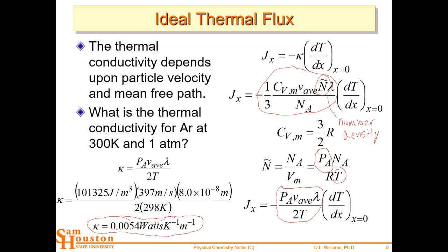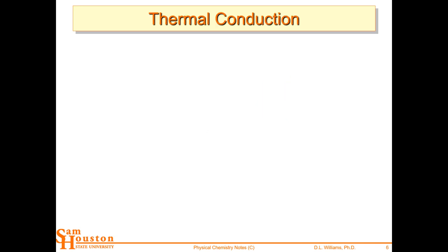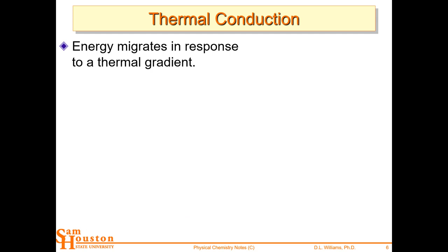The thermal conductivity for argon has units of watts per Kelvin per meter. You've got a temperature gradient in Kelvin, a distance, and the flow in watts — joules per second. It's really like a temperature difference because that's the gradient, and it tells us how many joules per second are flowing. This energy migrates in response to that thermal gradient.